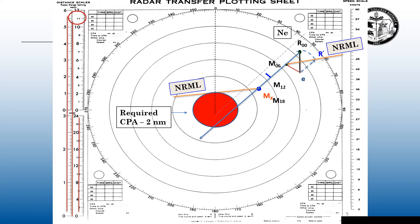If I turn to starboard, following relative motion rules, it's going to appear that they're going to turn to starboard too, and then they'll start to track down this new relative motion line. If the contact starts falling within our required CPA, we just have to scoot over a little bit — we do not have to do a whole other plot. If they go further out than two miles, that's fantastic. The master doesn't get upset, we don't get an ISM CPA violation, we burn up a little more fuel, and everybody's happy.